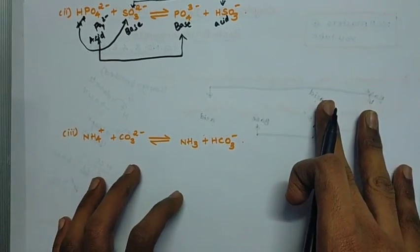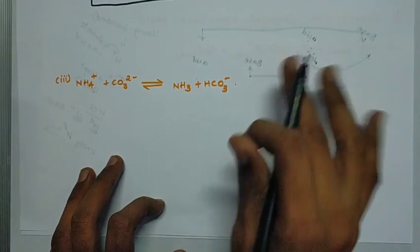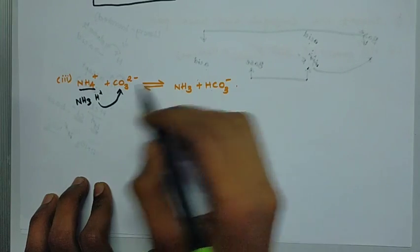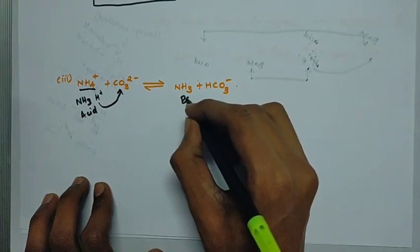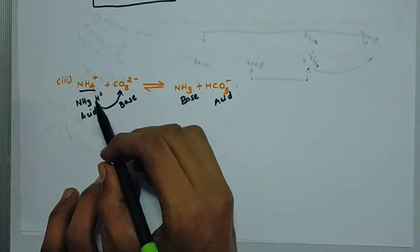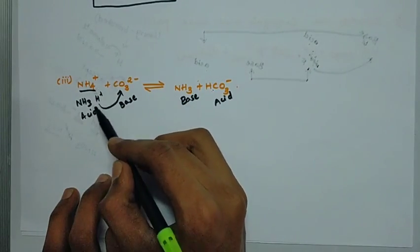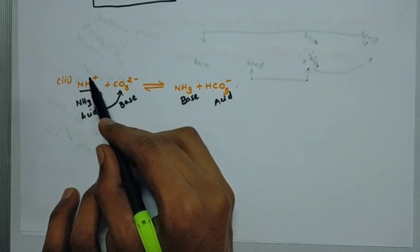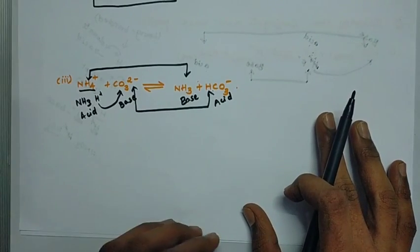For example: NH₄⁺ + CO₃²⁻ → NH₃ + HCO₃⁻. Here NH₄⁺ is the acid; it donates H⁺ to give NH₃ as conjugate base. CO₃²⁻ is the base; it accepts H⁺ to give HCO₃⁻ as conjugate acid. So this is the conjugate acid-base pair. I hope you are clear. We will see the next question.